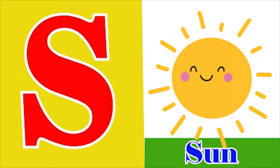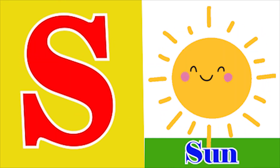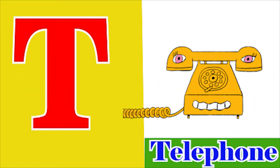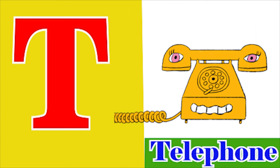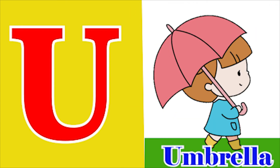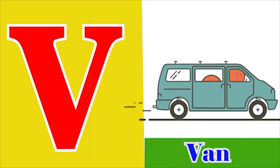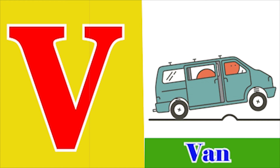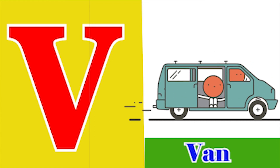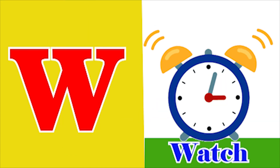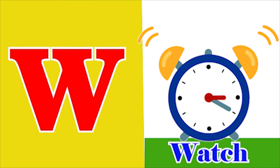Q for queen, R for robot, S for sun, T for telephone, U for umbrella, V for van, W for watch.